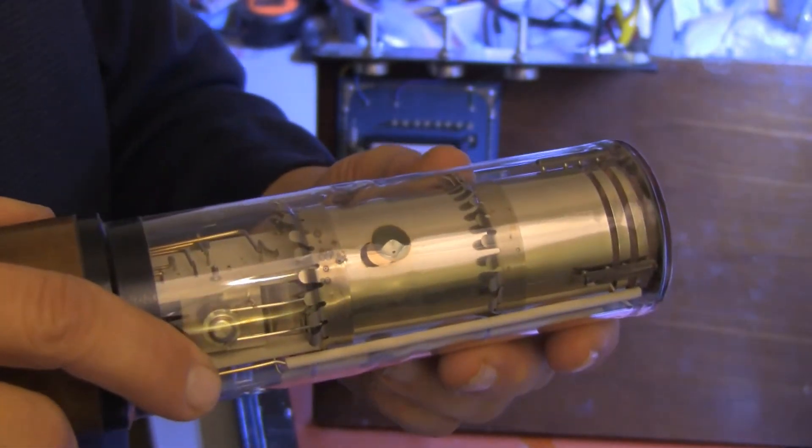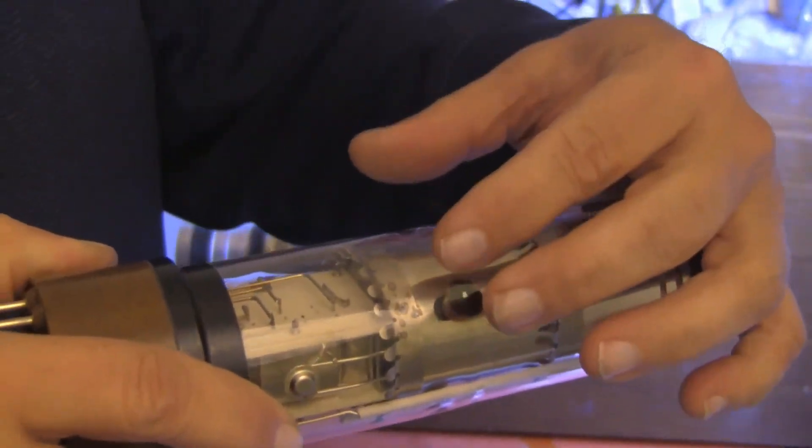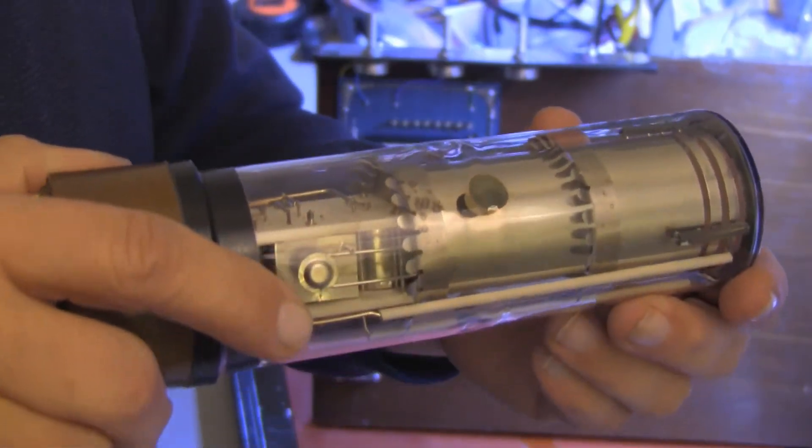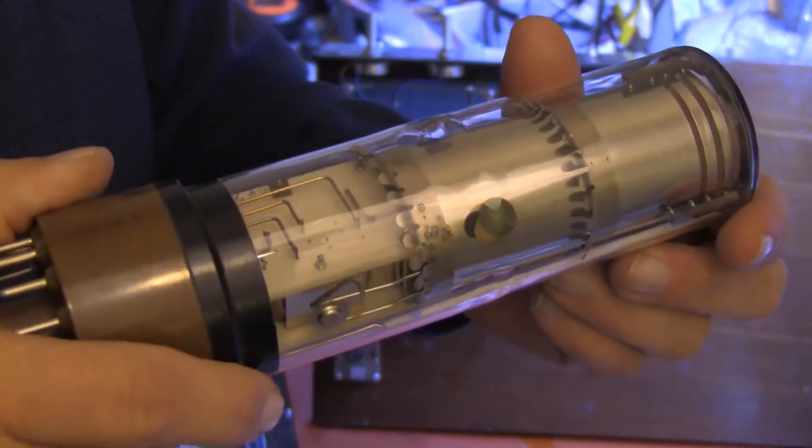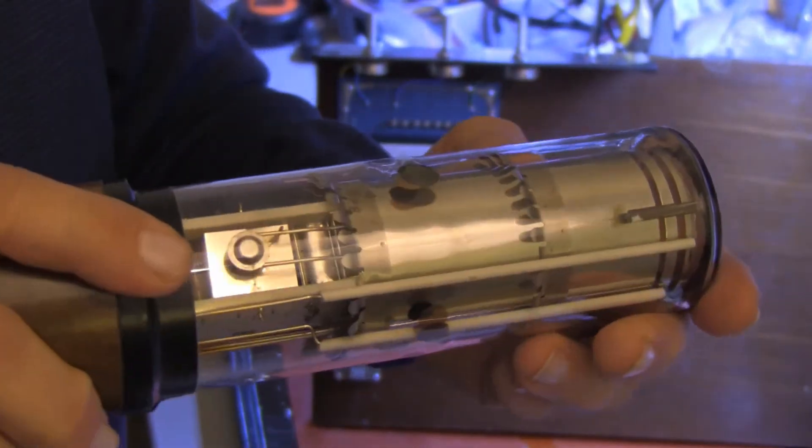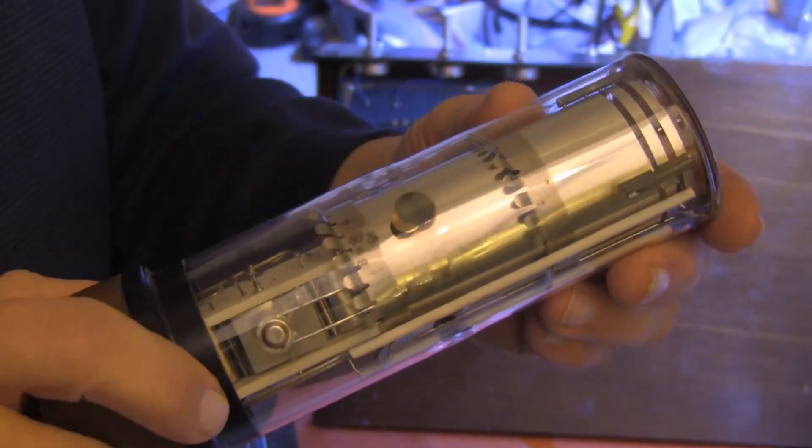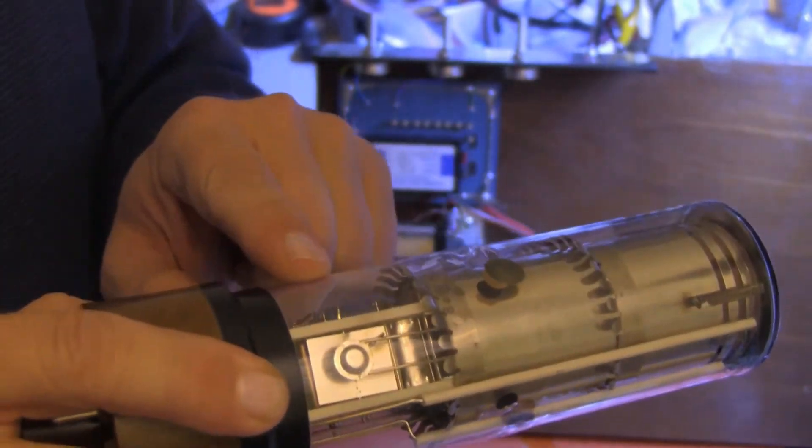The deflecting coils move that entire image back and forth over a little pinhole called the aperture. So that at any moment, we're looking at one point in the image, and passing that through to the amplifying section.